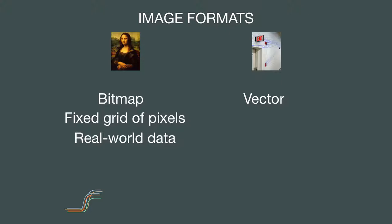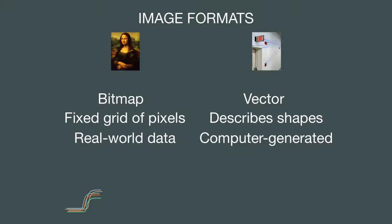Bitmaps are stored as fixed two-dimensional grids of pixels, typically generated from real-world data captured by scanners or digital cameras. Changing bitmap pixel data is sometimes called painting pixels. Vector images describe shapes and geometry in a computer and are typically computer generated — manipulating them is referred to as drawing vectors. A common example is a font file, which is a collection of vector images describing character shapes. In general, it is ideal to preserve vector data in vector format and bitmap data in bitmap format.